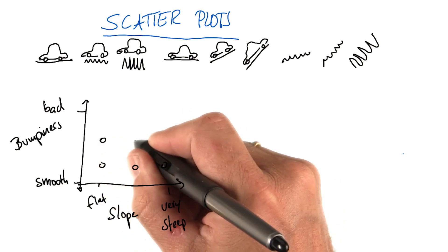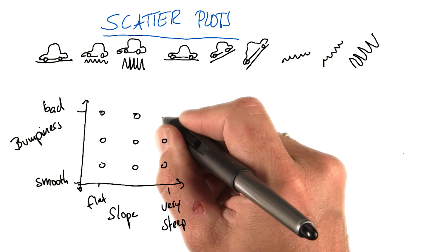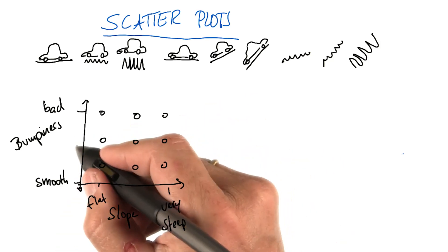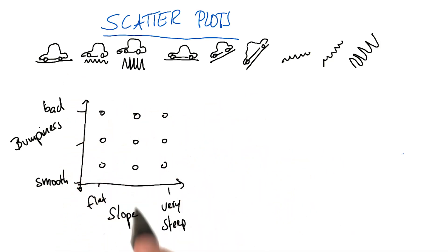And I give you nine possible points that correspond to all the combinations of the three bumpiness levels we encountered and the three slope levels.